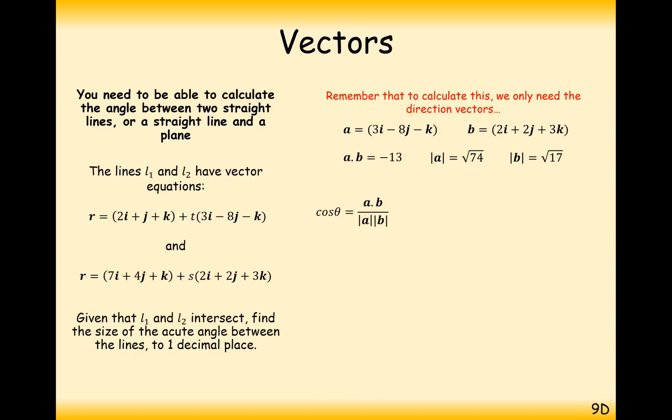All that's left for us to do is to just apply our formula. Cos theta equals A dot B over mod A times mod B. In this case it's going to be minus 13 over root 74 times root 17. Cos inverse of that answer gives us 111.5, which is the angle between the two vectors.